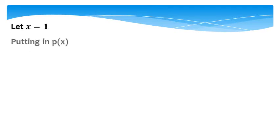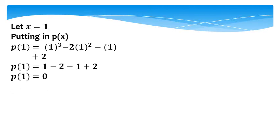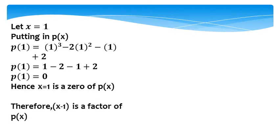Let x equal 1, putting it into p(x). So: 1³ minus 2 times 1² minus 1 plus 2. After applying the powers, the result is 1 minus 2 minus 1 plus 2. The plus 2 and minus 2 cancel, and the plus 1 and minus 1 cancel, so p(1) equals 0. Hence, x equals 1 is a zero of p(x). Therefore, (x minus 1) is a factor of p(x).